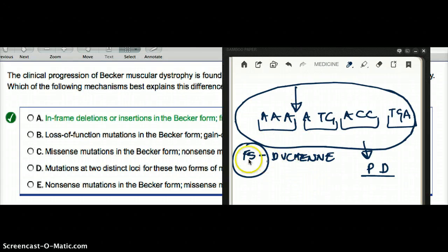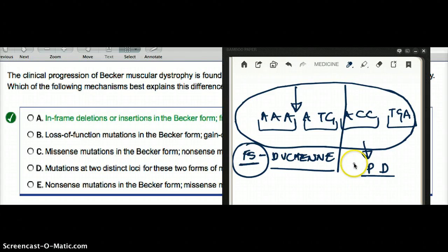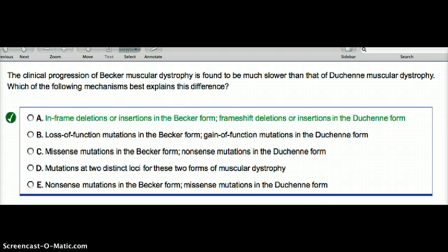So when there is frameshift in Duchenne, it happens to have a truncated protein. So the protein becomes cut short. So you don't have the full protein in Duchenne. But at least in Becker's, you're going to have a protein. The full protein is going to be there, it's just going to be defective. So that's why Becker is going to have a slower progression than Duchenne.